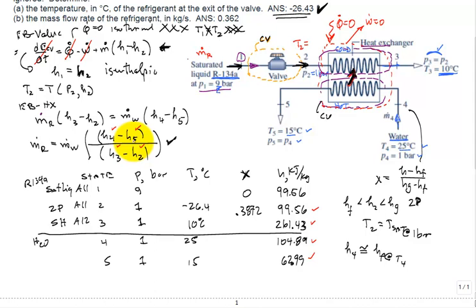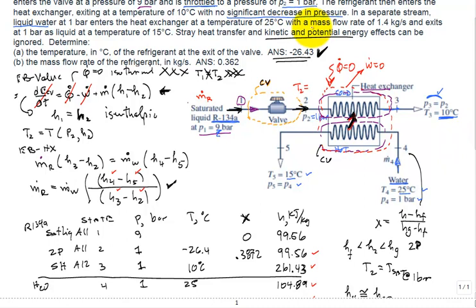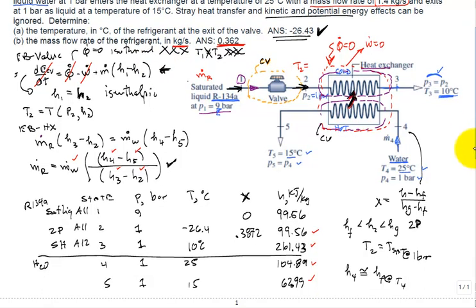The mass flow rate of the water, if I scroll back, it was given in the problem statement. The mass flow rate of 1.4 kilograms per second. Known. And I'm going to skip the step of writing down the solution. But the solution comes in at the mass flow rate of the refrigerant is 0.362 kilograms per second. Well, with that, hopefully the problem you found helpful. Thank you.